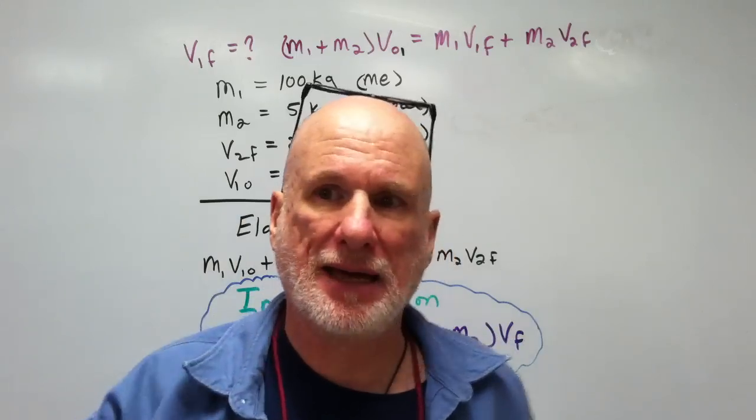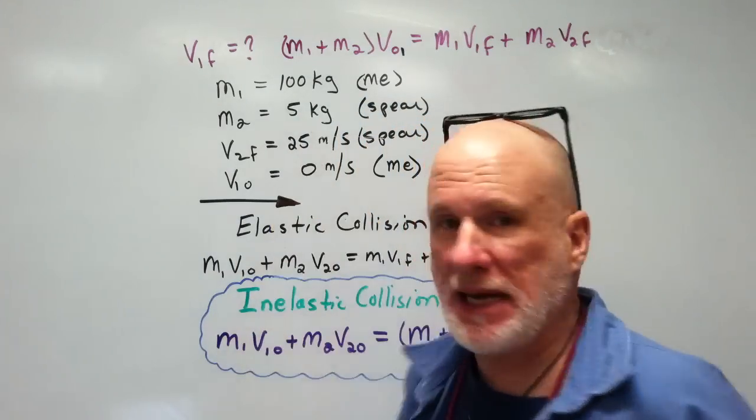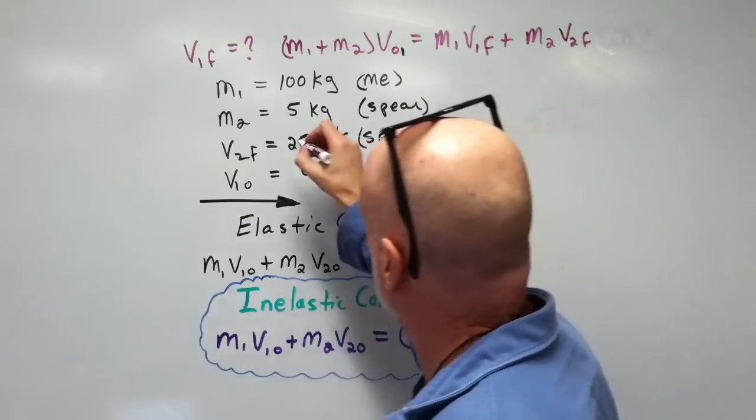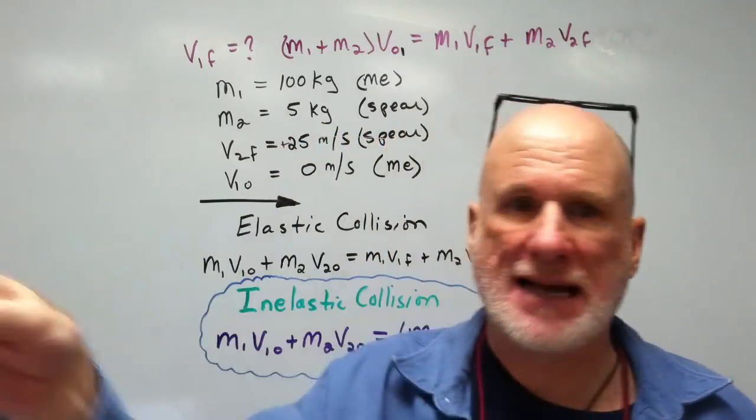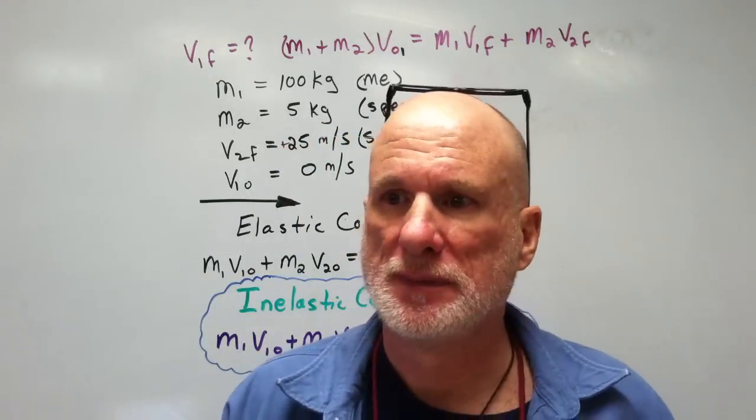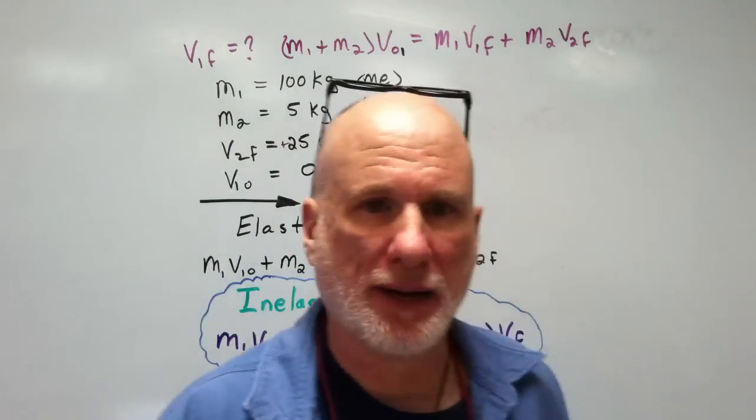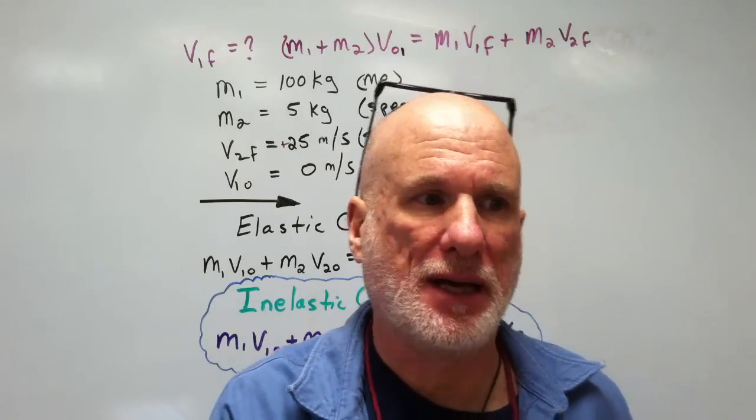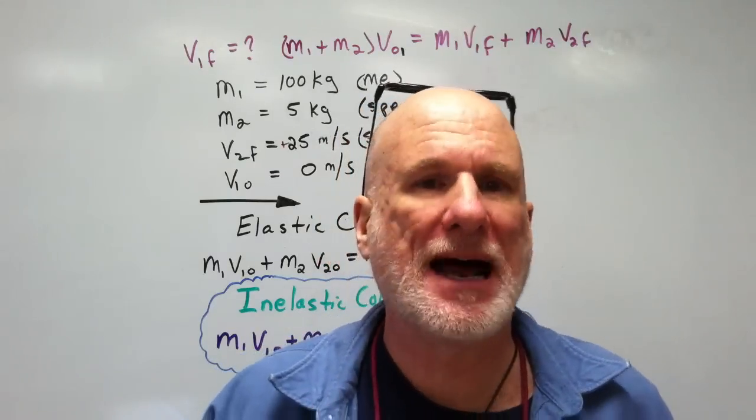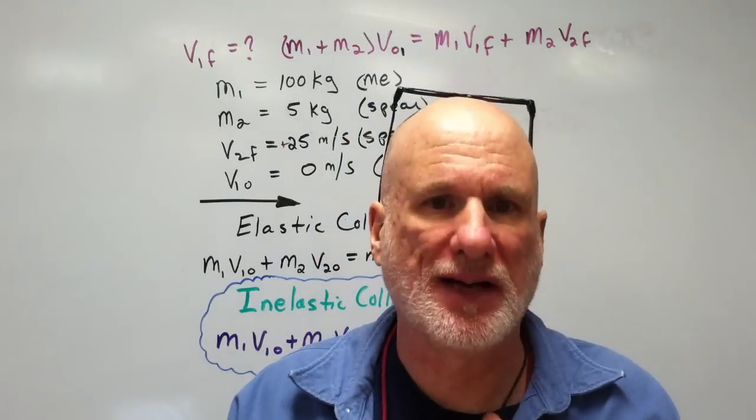We're going to say that the spear is in the positive direction, that's positive 25 meters per second that way, and the kickback is going to send me the opposite direction. But how fast? What's my final velocity?